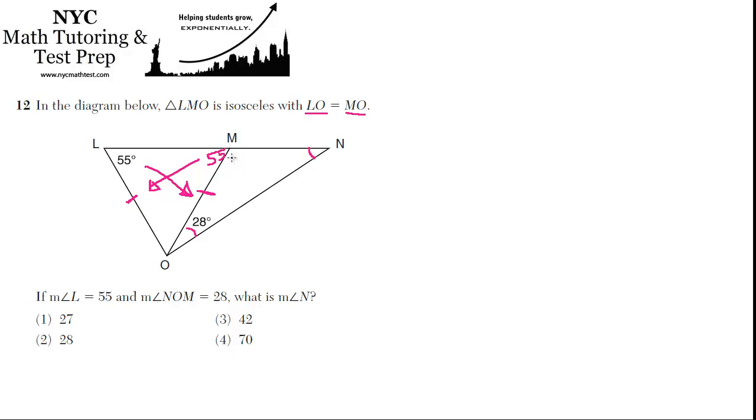So we can subtract. This is a straight angle, right? So if this is 55, then the angle on this side must be 180 minus 55, which is 125.